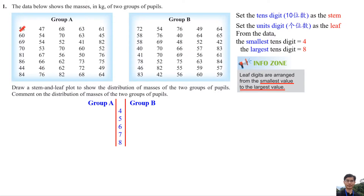The first data in Group A is 58, so we write 8 in Group A beside the number 5. The second number is 47, so we write 7 beside number 4 in Group A. The third number is 68, so we write 8 beside number 6 in Group A. The next number is 63, so we write 3 beside number 6. However, 3 is smaller than 8, so 3 must be written on the right side of number 8.